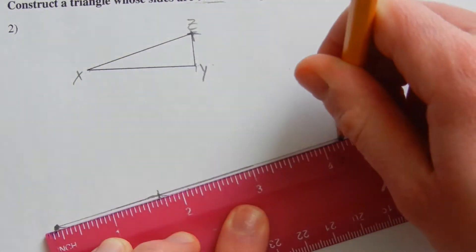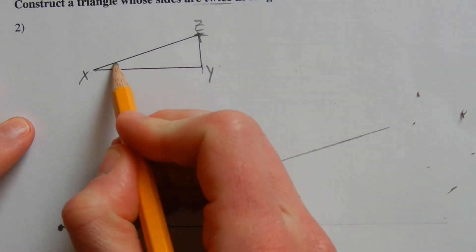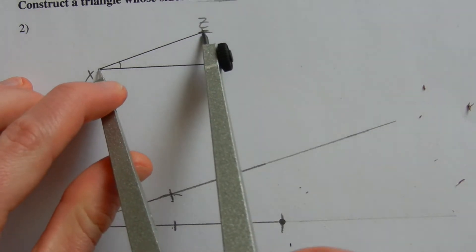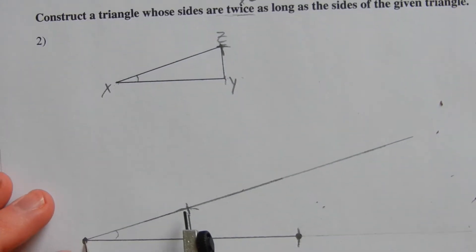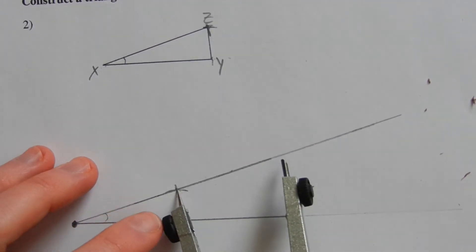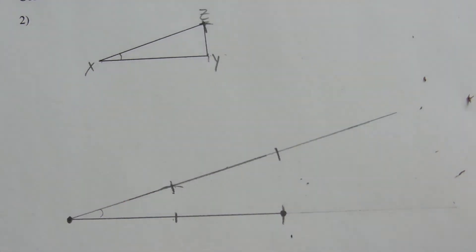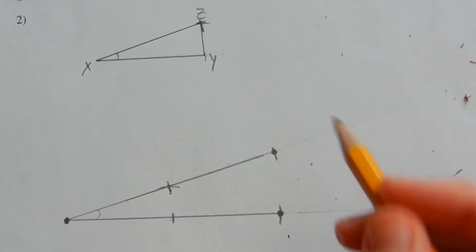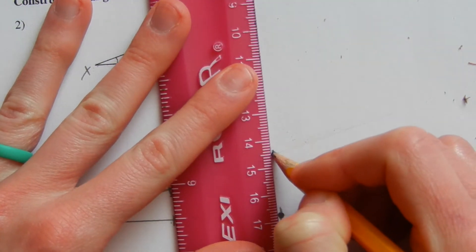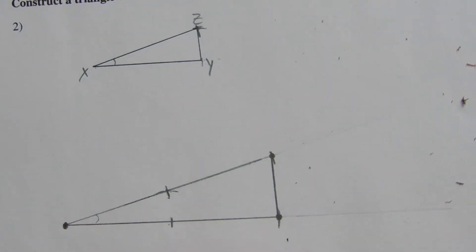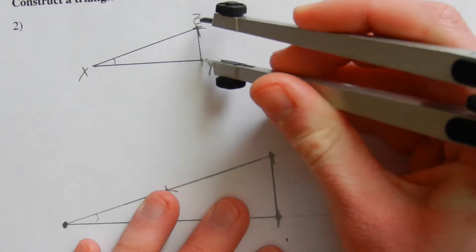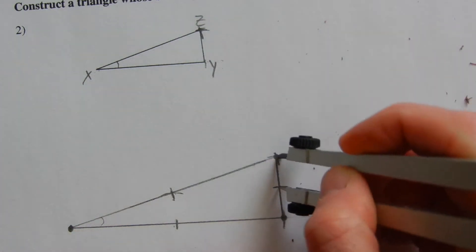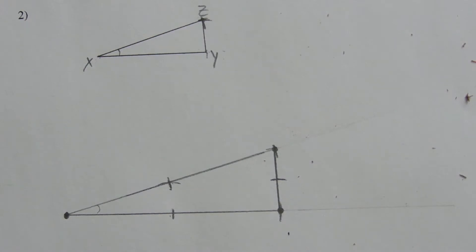Going through that intersection and continuing on preserves angle X, but now we need to make the sides twice as long. We take the measurement from X to Z — which we already have once — place our compass and make that measurement again to produce a longer segment. Now segment XZ is twice as long. We have the three points of our triangle, so we just connect the last two points. To double-check, take the length of YZ, put it on the intersection, and take that length again — it intersects that point. That is how you construct a triangle whose sides are twice as long.